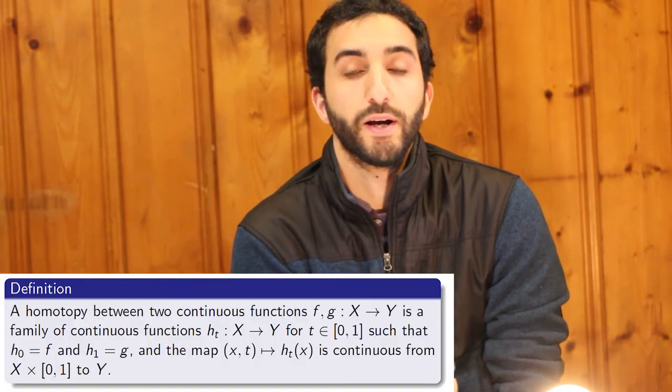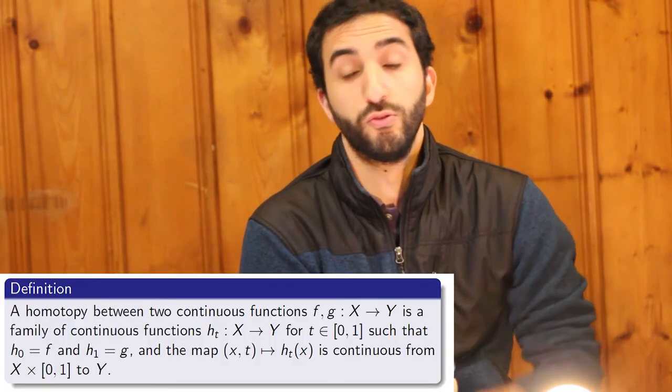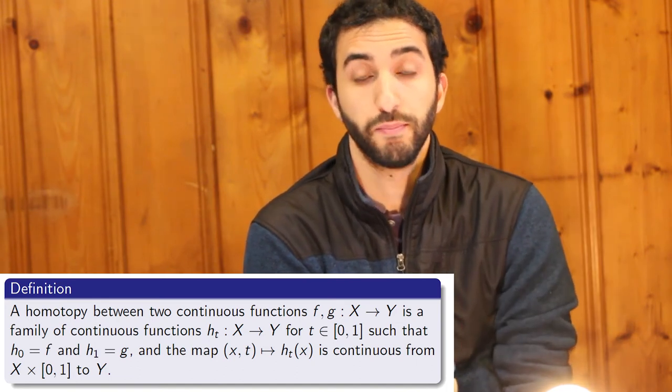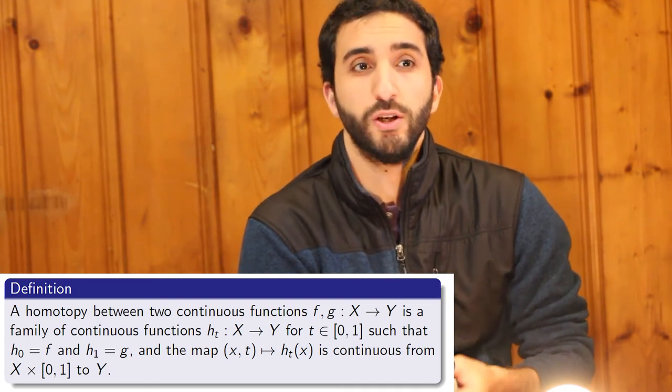Hello everyone, welcome to lecture three of algebraic topology. Last time we defined a notion of homotopy between two maps whose target space and input space were the same. We want to extend this notion to a notion of homotopy of spaces. A common theme in all of mathematics: if you have a notion of a map and you want to extend it to a space, you should extend that notion to the identity map. So what we're going to do is homotope the identity map, and this will give us a notion of homotopy of spaces called homotopy equivalence. This is the most important equivalence relation in algebraic topology, and one of the central goals of algebraic topology is to classify spaces up to homotopy equivalence.